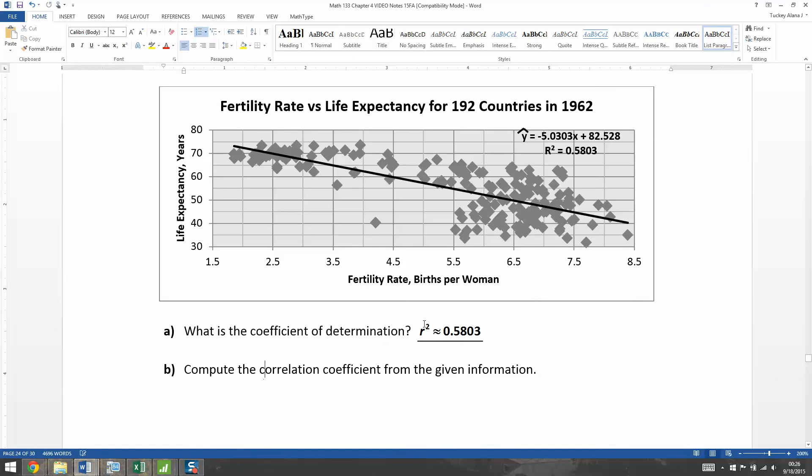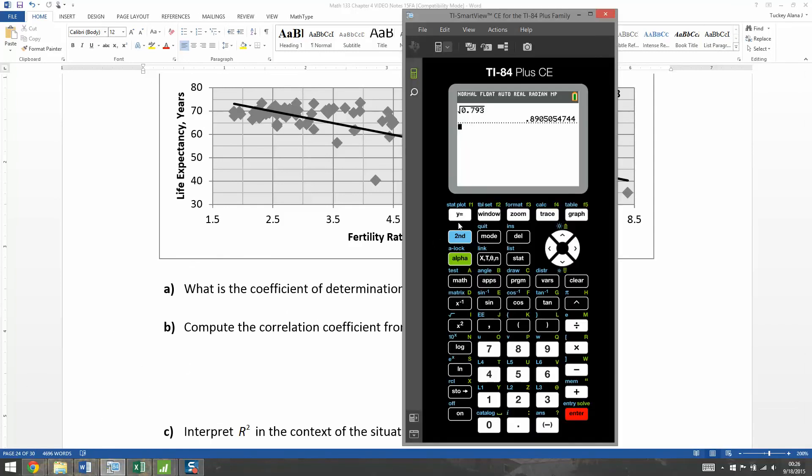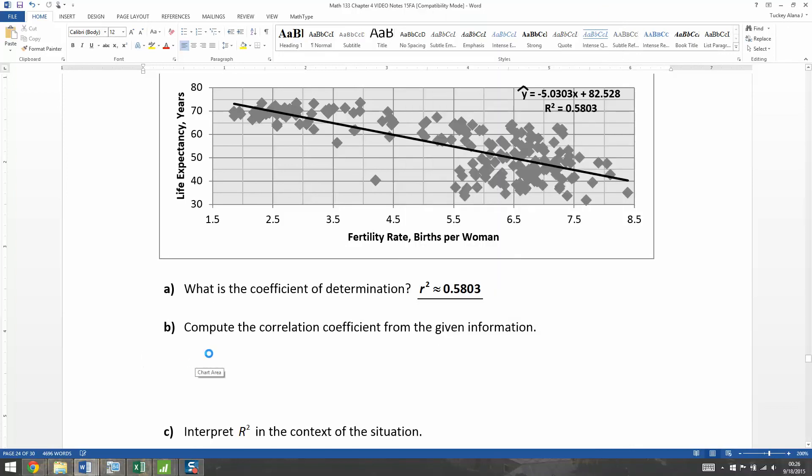Compute the correlation coefficient from the given information. All right, there's another one. So we're going to have to find the square root of 0.5803. All right, so let me grab the calculator. I want the square root 0.5803. That gets me 0.762, roughly. All right, so let me type that up.